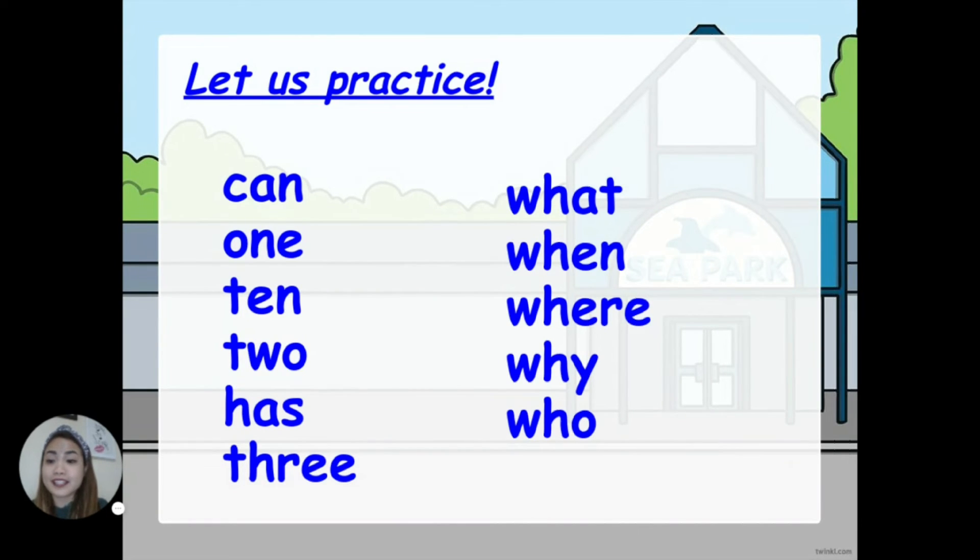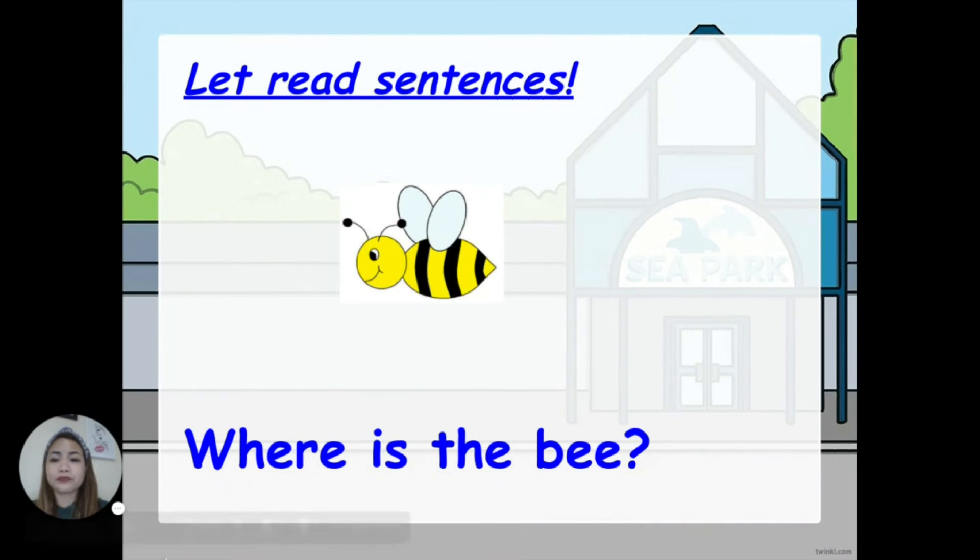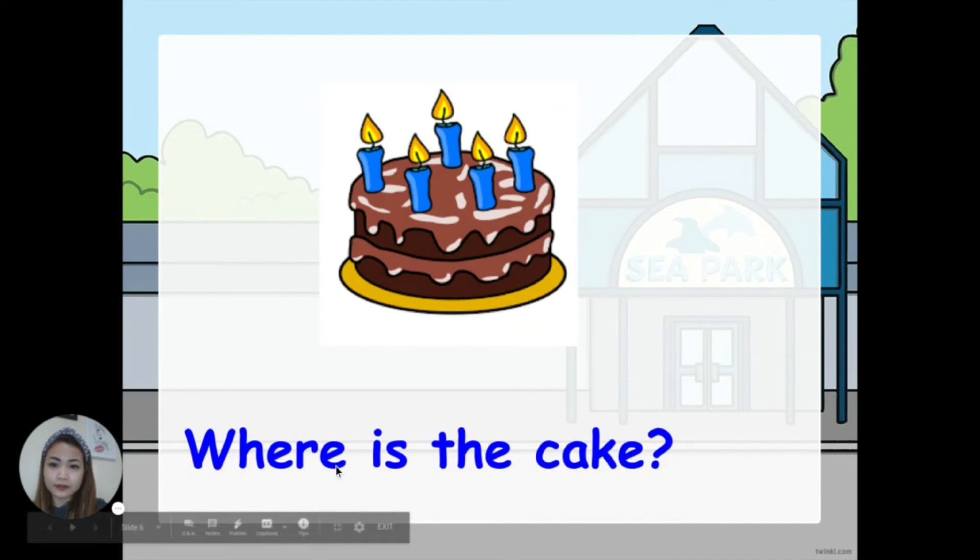Now, let's put these words in sentences and let's read, okay? First, I'll read it slowly. Second one, a little bit faster. You guys, you can always pause the video, alright? And practice on your own. Where is the bee? Where is the bee? Next.